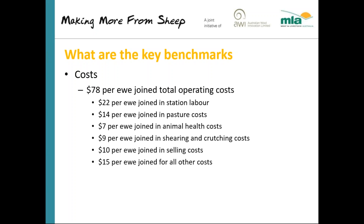That $78 includes animal health treatments, fodder and supplementary feed, pasture costs, labour and owner labour. For owner operators, the first labour unit gets allocated $115,000 and every subsequent labour unit gets allocated $70,000. It includes depreciation on plant and equipment, but does not include interest costs or lease costs — so it's basically your operating costs without any finance costs.